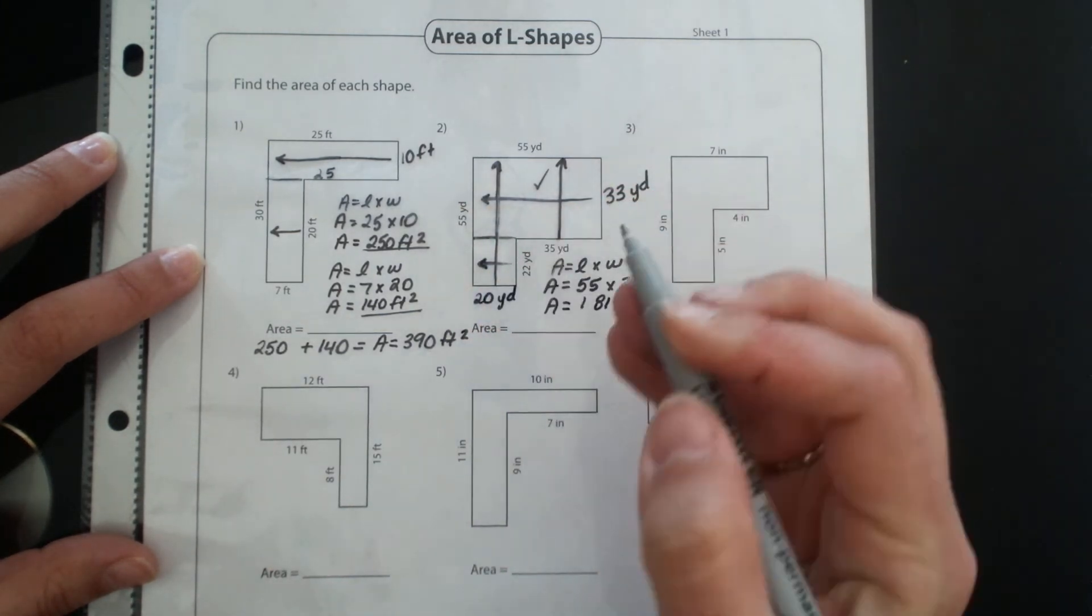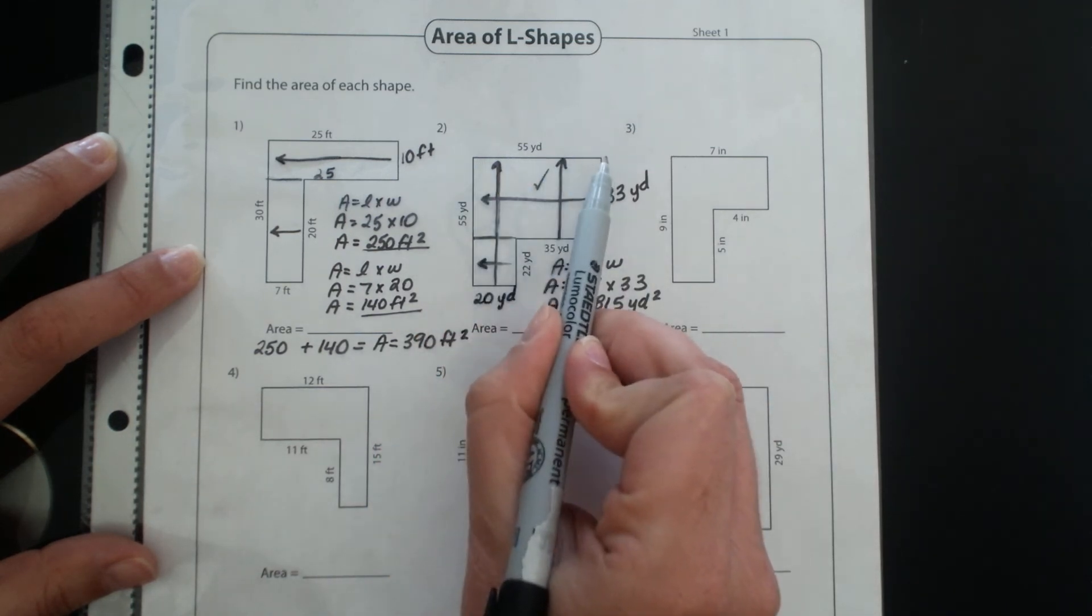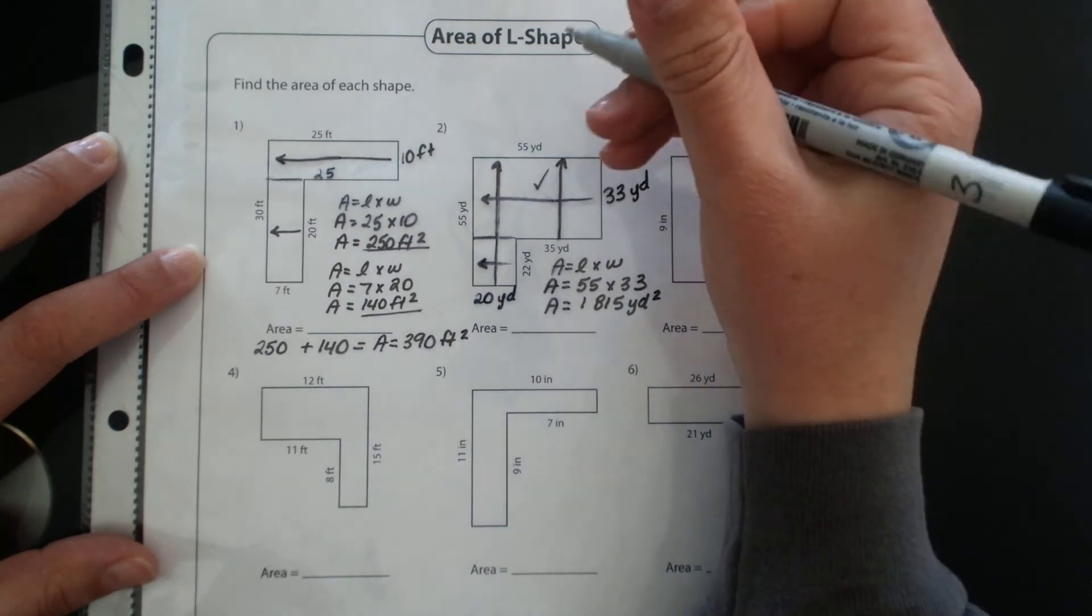Because 20 plus 35 gives 55 and this is my total across. I'm just going to do this calculation up here.